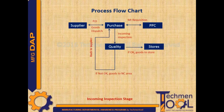But if any non-conformance is observed, it is identified as NC and goes back to the supplier. The supplier has to take necessary corrective actions. Sometimes the quality department accepts goods under deviation if the goods meet most of the major requirements.